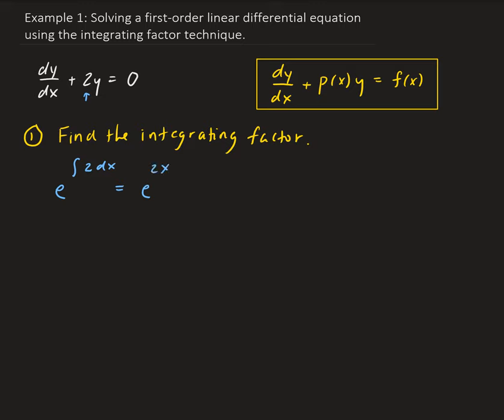Normally we would write a constant c here, but we don't have to do that here. Eventually, that c will be combined with another constant at the end. So we'll just leave it as e to the 2x. This is our integrating factor.